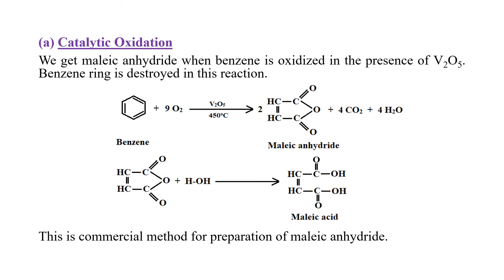Benzene की catalytic oxidation के result में maleic anhydride बन जाता है। Oxidation के लिए conditions: vanadium pentoxide और temperature 450 degree Celsius। Benzene ring is destroyed in this reaction। यह reaction use होता है for commercial preparation of maleic anhydride। Maleic anhydride में water add करके hum maleic acid बना सकते हैं।